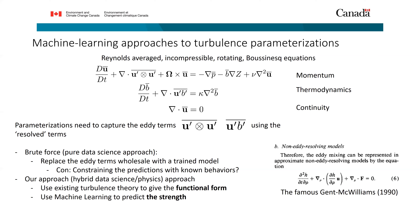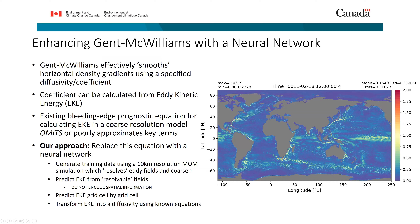Our approach was to combine the data science approach with an understanding of the physics. We have a lot of existing turbulence theory to give the functional form of what these eddy terms might look like — something like f(ū, b̄) derived from fundamental physics — and then use the machine learning side to predict the strength of it. The particular parameterization we're targeting is the Gent-McWilliams parameterization, one of the most famous in oceanography. What it does is smooth horizontal density gradients using a specific diffusivity, mimicking what eddies do.